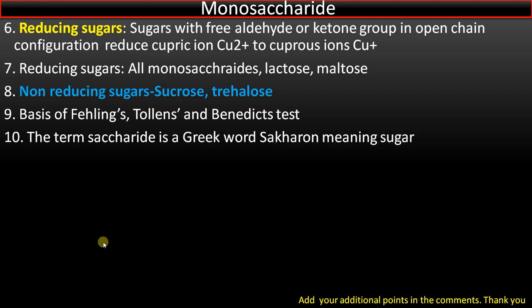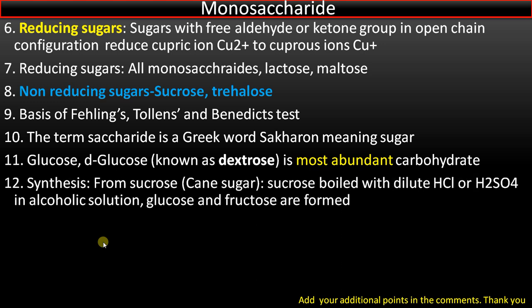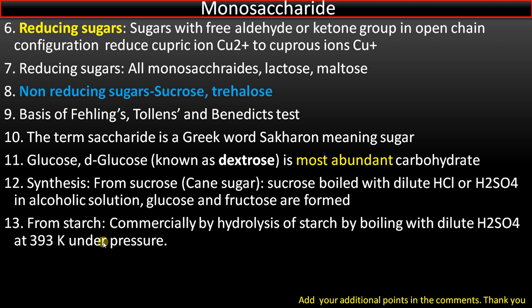Point number ten: the term 'saccharide' is a Greek word from 'saccharon,' meaning sugar. Point number eleven: D-glucose, which is dextrorotatory and known as dextrose, is the most abundant carbohydrate. Point number twelve: glucose is synthesized from sucrose (cane sugar) by boiling with dilute hydrochloric or sulphuric acid, forming glucose and fructose. Commercially, it is produced from starch by hydrolysis with dilute H₂SO₄ at 393 K under pressure.